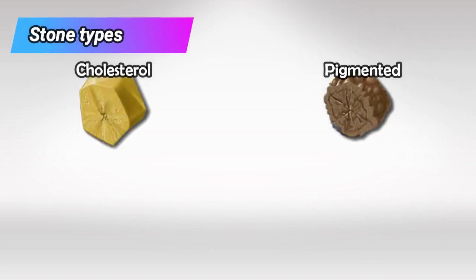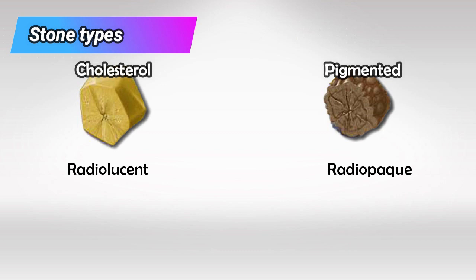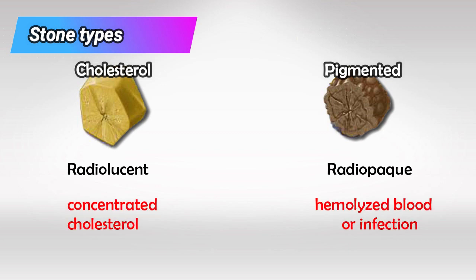The two major categories for gallbladder stones are either cholesterol stones or pigmented stones. Cholesterol stones are the radiolucent type and pigmented stones are the radiopaque type. Cholesterol stones obviously have a lot of cholesterol, and pigmented stones contain heme-derived blood breakdown products.